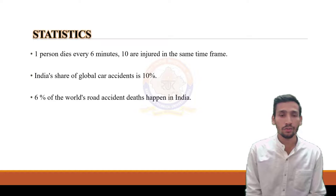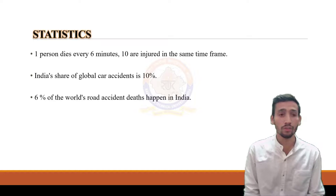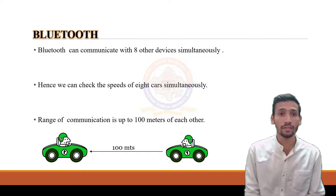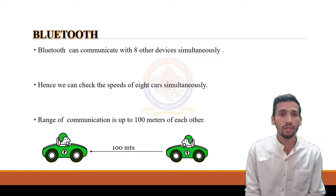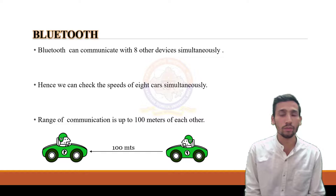The next topic is Bluetooth. Bluetooth is a standard wireless network for short-range transmission of digital audio and data. It can communicate with other parts simultaneously. With this, we can check the speed of 8 cars simultaneously, with a communication range of up to 100 meters from each other.